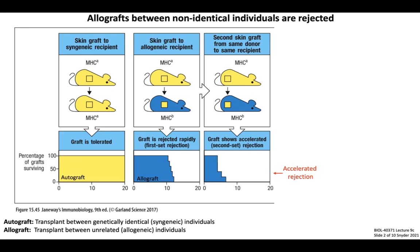The kinetics of both first-set and second-set rejection give a hint that allograft rejection is most likely mediated by adaptive responses. We know that priming of adaptive immune responses for the first time takes about 10 days, which matches the timeframe for rejecting allografted tissue in the first transplant. Reactivation of adaptive responses upon secondary exposure occurs much more rapidly, which is consistent with the accelerated kinetics of second allograft rejection.